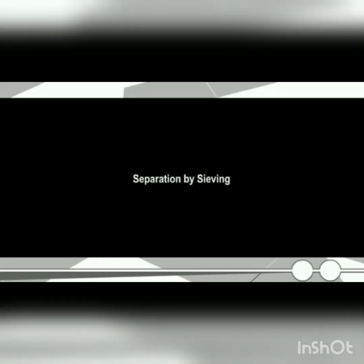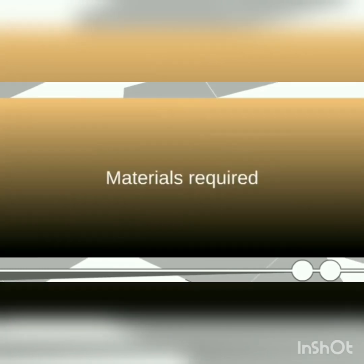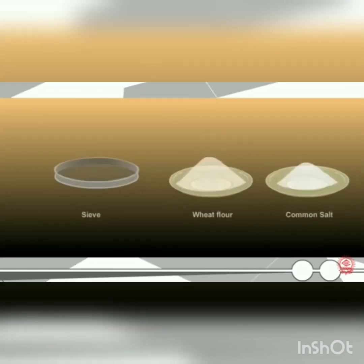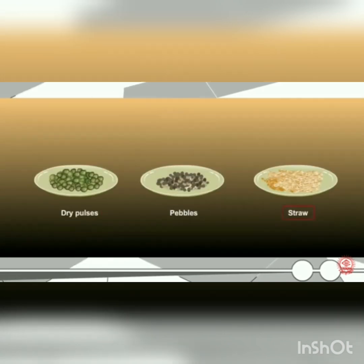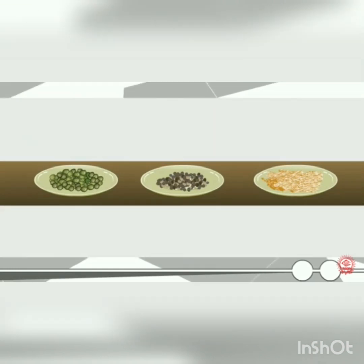Separation by sieving. Materials required from your house: sieve jo jal type ka rahata hai, flour, common salt, dry pulses, pebbles and straw.